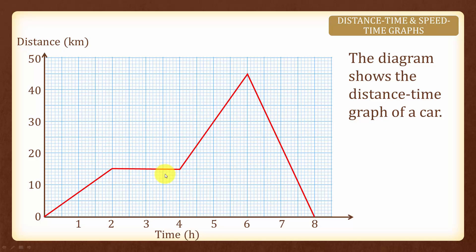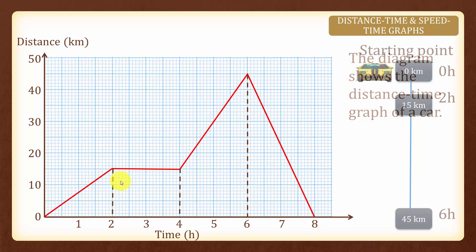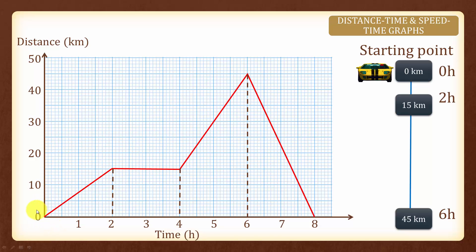Now, let us look at how to interpret a distance-time graph. The diagram shows the distance-time graph of a car. This is our starting reference point, and at 0 hours, the car travelled 0 km. The upward sloping line on a distance-time graph means that the car is travelling at constant speed, because speed is equal to distance divided by time. Therefore, the slope of the distance-time graph represents speed.